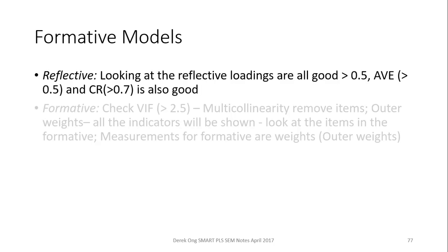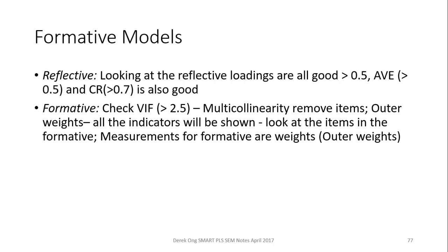Whereas in formative measures, instead of checking loadings and AVE, you need to check the VIF for multicollinearity — if there is any, you have to remove those items. You also need to check the outer weights, which are like beta weights, similar in function to loadings but for formative indicators. Look at the items in their formative measurements and the formative weights.